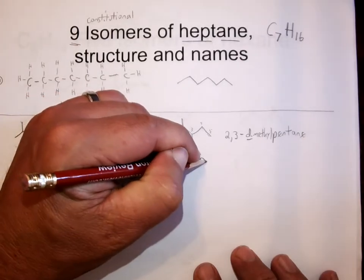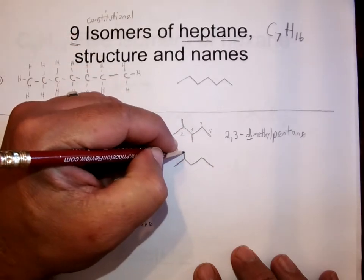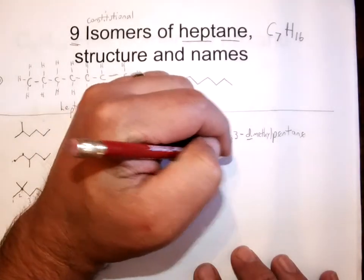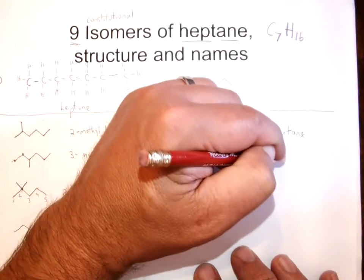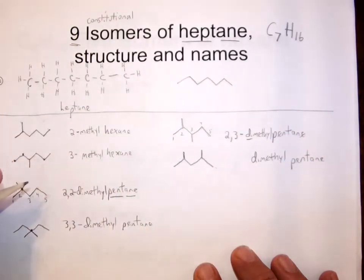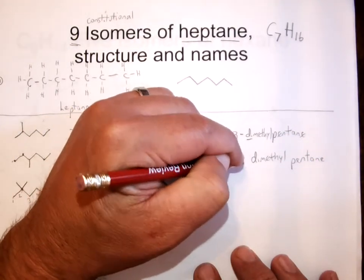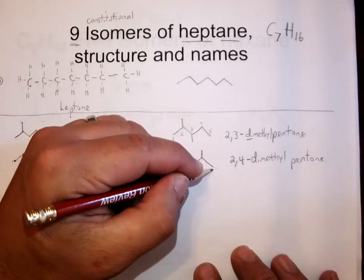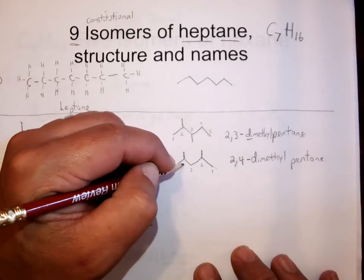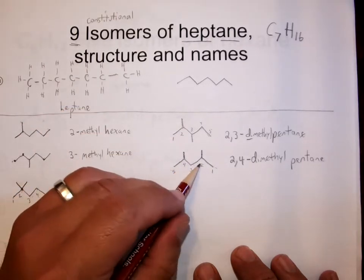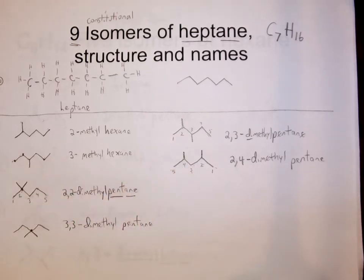We can then put five carbons in a row, put one methyl on the second carbon and one on the fourth carbon. This gives us a different molecule from anything we've drawn yet. Again, two methyls — dimethyl — attached to a five-carbon longest chain, pentane, with one on the second and one on the fourth. So 2,4-dimethylpentane. It doesn't matter which way you number this — you're going to get the same name and the same basic molecule.